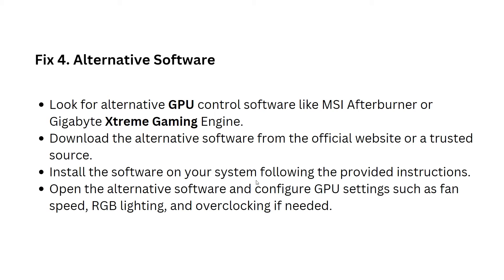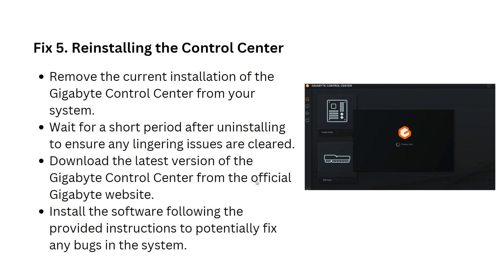There is also an alternative tip: look for alternative GPU control software such as MSI Afterburner or Gigabyte Extreme Gaming Engine. Download the alternative software from the official website or a trusted source, install it following the provided instructions, then open it and configure GPU settings such as fan speed, RGB lighting, and overclocking.